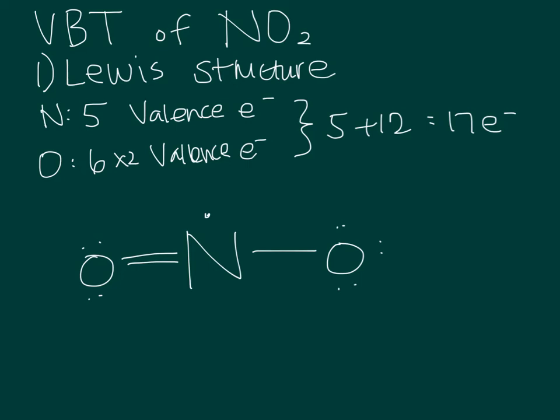Hi, my name is Christina Kwok from Chemistry 112, and we're going to be talking about the valence bond theory of nitrogen dioxide. We're going to first talk about how to draw the Lewis structure, then moving on to the VSEPR diagram, then drawing the electron box diagram, and finally concluding with the contour diagram for the valence bond theory portion.